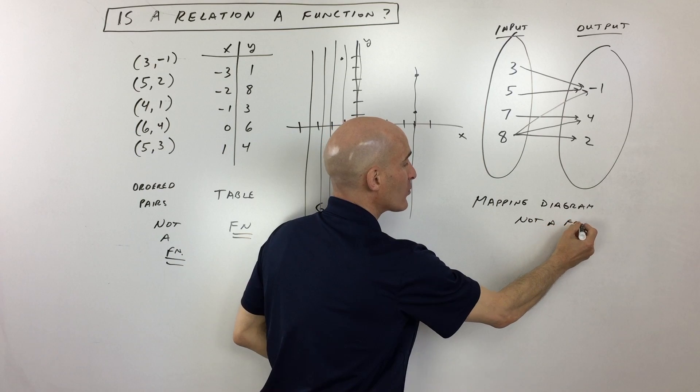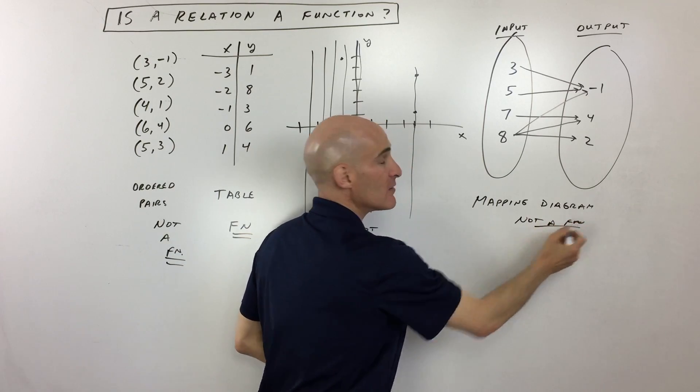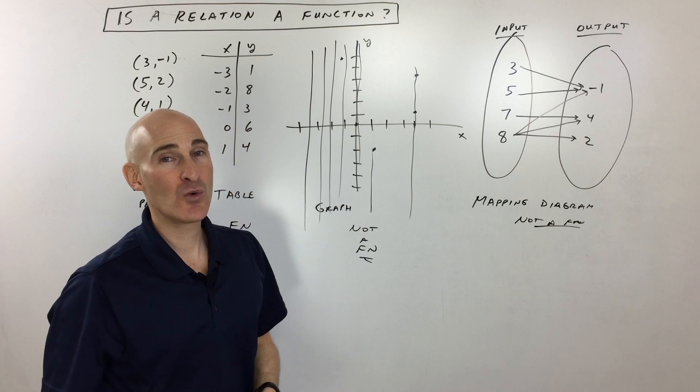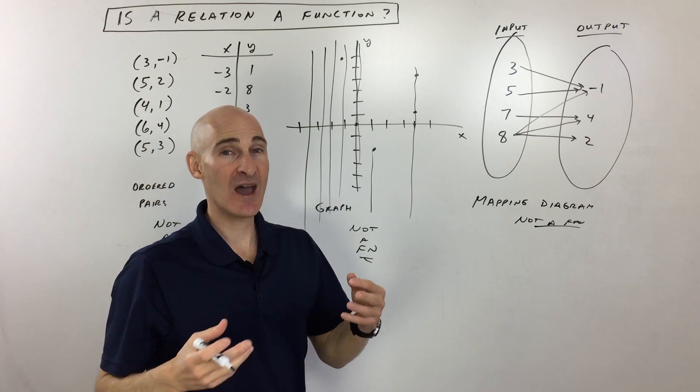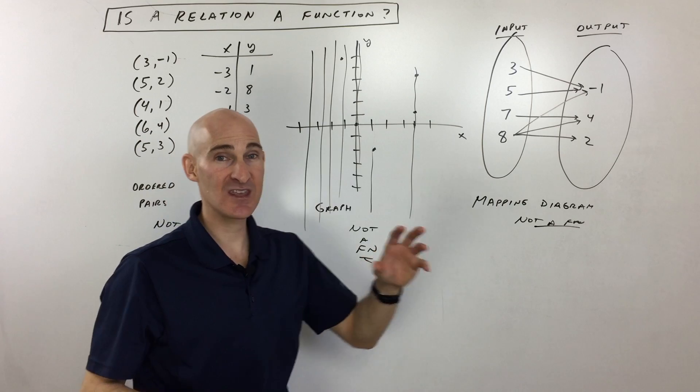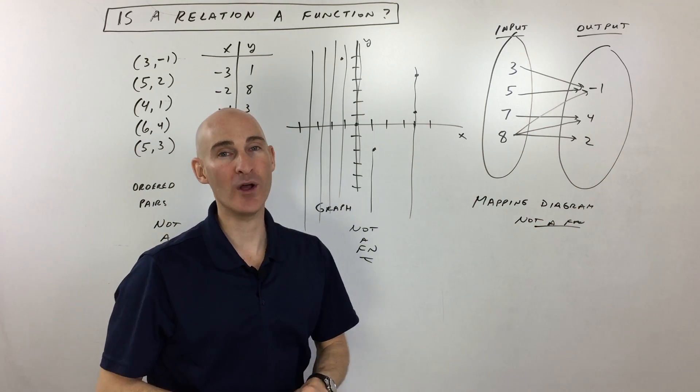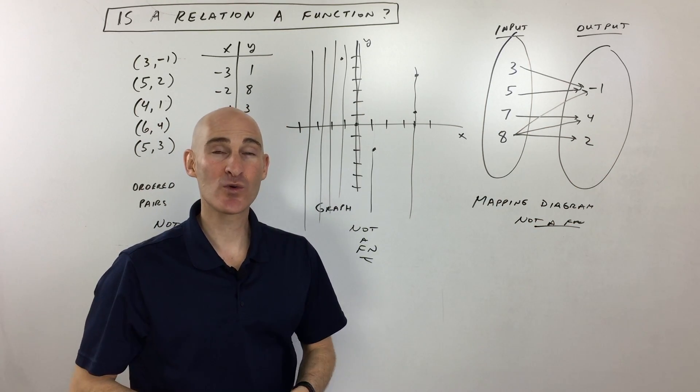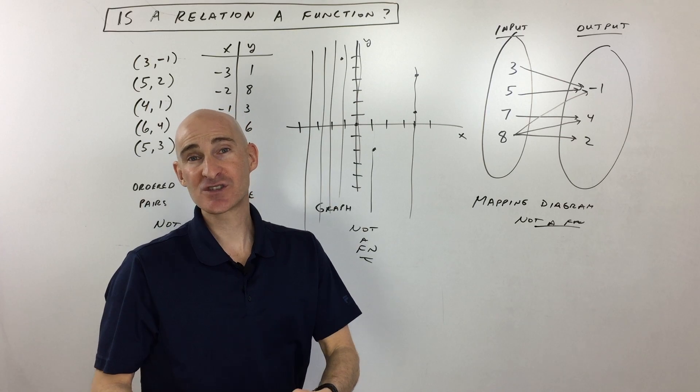So basically, a relation, like we said, is a pairing of inputs with outputs, but you want to make sure that not every relation is a function unless it satisfies that condition if each input just goes to one output. So I hope this helped you understand how to work with relations and functions better.